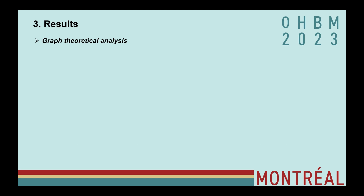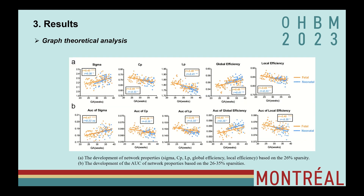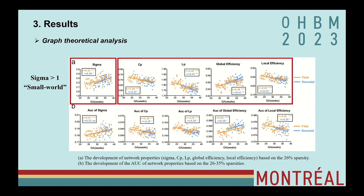Finally, in the graph theoretical analysis, networks of all fetal brains showed sigma greater than 1, indicating the appearance of small-world topology before 22 weeks. Characteristic path length and local efficiency decreased with age, and global efficiency increased with age, suggesting enhanced integration and weakened segregation during the prenatal period.